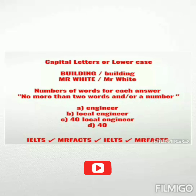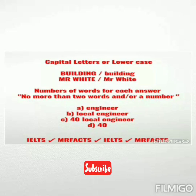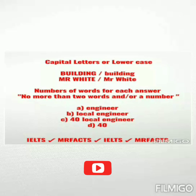Let's look at examples of 'no more than two words and/or a number': (a) 'engineers' — one word; (b) 'local engineers' — two words; (c) '40 local engineers' — two words and a number; (d) '40' — just a number. Be very careful: if the instruction says 'numbers' in plural, you might have two numbers, so always pay close attention to the exact wording of the instructions.